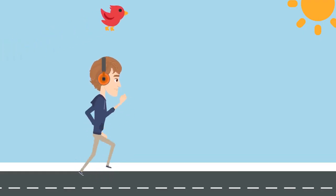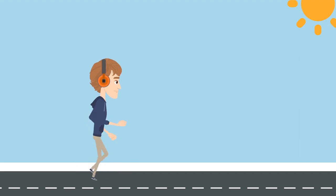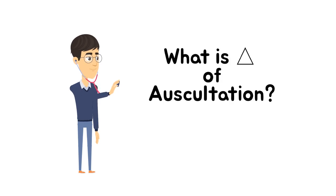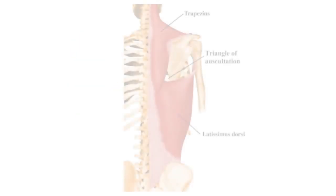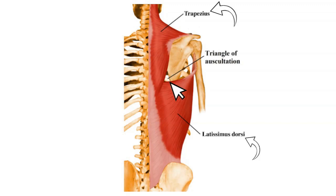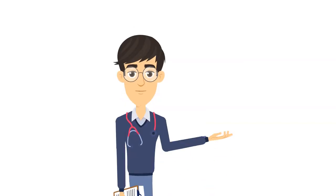It's been a long day — let's jog a little. Now, what is the triangle of auscultation? It's the only part of the back without muscles, bounded inferiorly by the upper border of latissimus dorsi, superomedially by trapezius, and laterally by the medial border of the scapula. So respiratory sounds are heard better here.